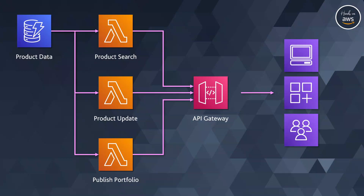Let's look at an example serverless application using Lambda functions as microservices. Let's say there is a business application that invokes one of the many Lambda functions through API Gateway, and each of these Lambda functions deals with product data on the backend, but each has some unique purpose or functionality built into it.